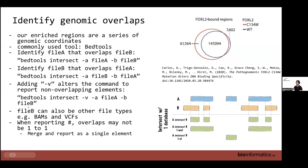File B can be a variety of file types — a BED file containing a set of coordinates, a BAM file, or a VCF. If file B is a BAM, bedtools intersect will give you all regions that contain reads from that BAM. If file B is a VCF, it will return all regions that intersect with variant calls.